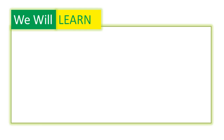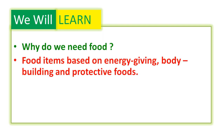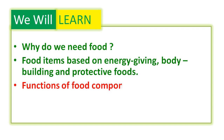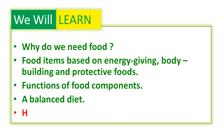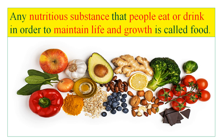In this topic we will learn why do we need food; food items based on energy giving — i.e. carbohydrates and fats; body building — i.e. proteins; and protective foods, meaning vitamins and minerals. We will also cover functions of food components — carbohydrates, fats, proteins, vitamins and minerals — a balanced diet, and how to avoid wastage of food.